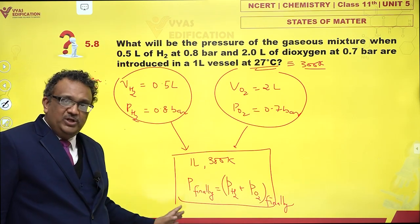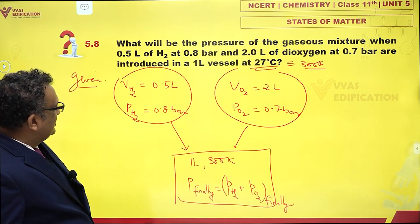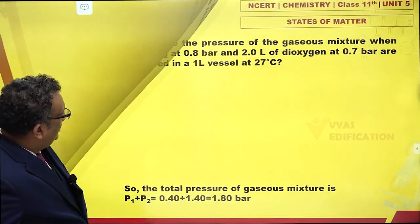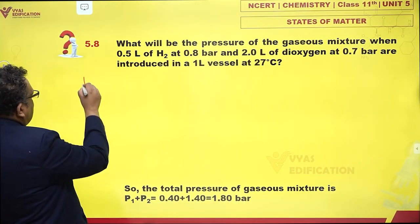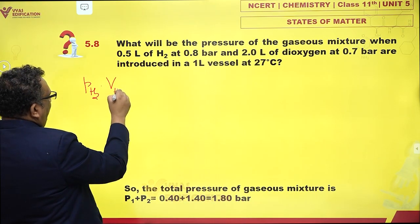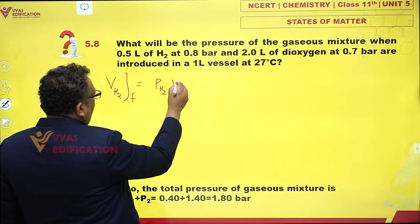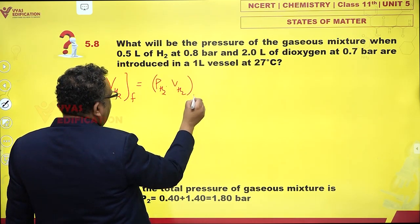So I'll say that P1V1 = P2V2, because temperature finally is the same as initial 27°C. So I can say that partial pressure of hydrogen into volume of hydrogen finally equals pressure of hydrogen into volume of hydrogen initially.